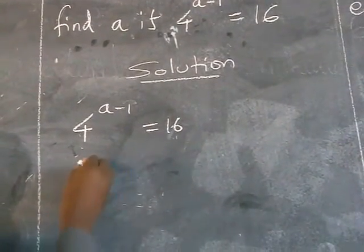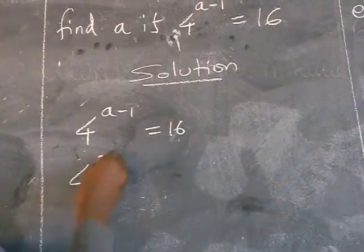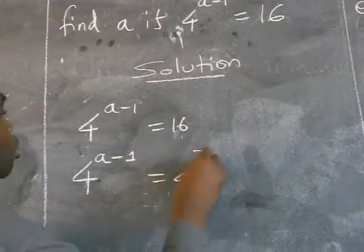So we are going to rewrite again our expression as 4 power a minus 1 equals to 4 power 2.